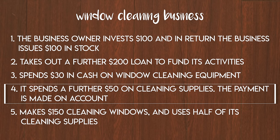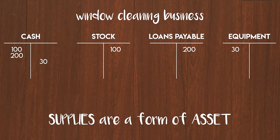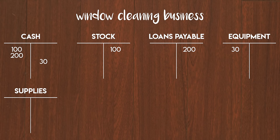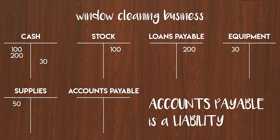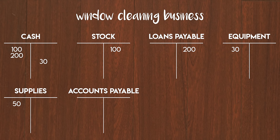Next our business spends a further $50 on cleaning supplies, which it pays for on account. Paying for something on account means that you agree to pay the supplier at a later date. So for now you hold on to that cash, but you need to recognize a liability since you owe the supplier for the goods they sold you. Supplies are a form of asset so we create a new T-account for supplies and debit the left-hand side by $50. We owe $50 to the supplier so we need another T-account for accounts payable. Accounts payable is a liability — the L in DEALER — so we credit the right-hand side of the T-account by $50.